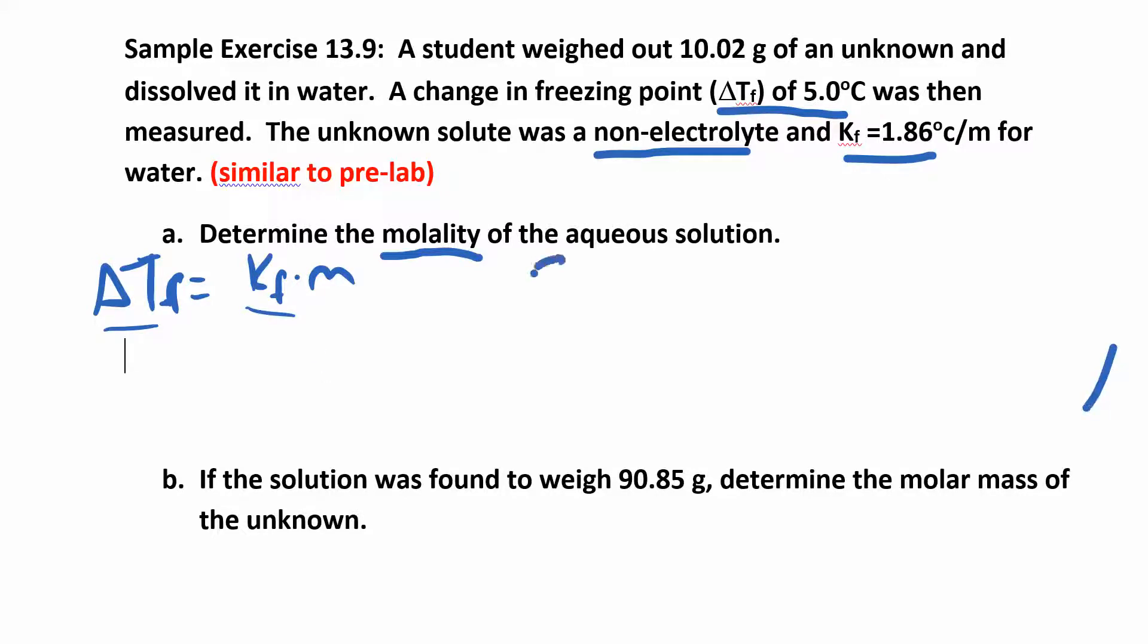So our delta T_f is 5. So we have 5 is equal to 1.86 times molality. We just have to divide by the 1.86. Divide by 1.86 and then for your molality you get 2.688 and I'm carrying out a lot of extra sig figs there because I'm going to carry them through.